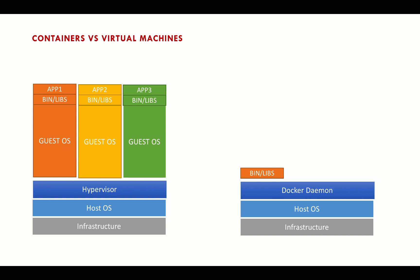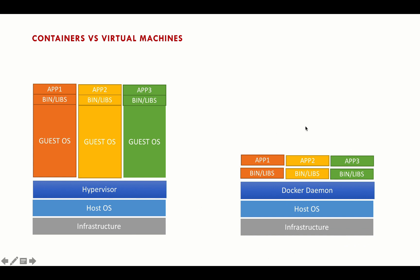In Docker, containers share the same OS kernel. Each container has its own set of binaries and library files. As you can see, we have App 1, App 2, and App 3, each with different binaries and library files, but all sharing the same operating system. That's the complete Docker container architecture: infrastructure layer, host OS, Docker daemon — which virtualizes the OS — and on top, different containers.